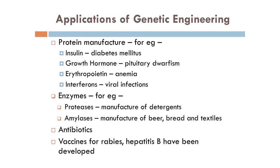The applications of genetic engineering: this can be used for protein manufacture, for example insulin which is used to treat diabetes mellitus, growth hormone which is used to treat pituitary dwarfism, erythropoietin for anemia, and interferons for viral infections. We can also prepare enzymes, for example proteases which are used for manufacture of detergents, amylases for manufacture of beer, bread and textiles. Antibiotics can be prepared and vaccines for rabies and hepatitis have also been developed.